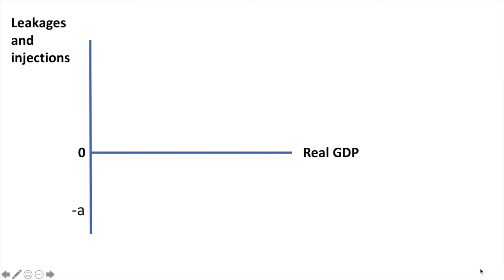Our injections are represented by a horizontal line that occurs above zero. This line represents the sum of all of our injections. Where the leakages and injections intersect is our equilibrium level of real GDP or real national income, Y.